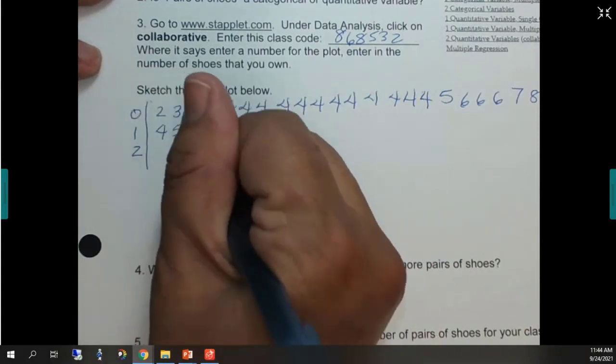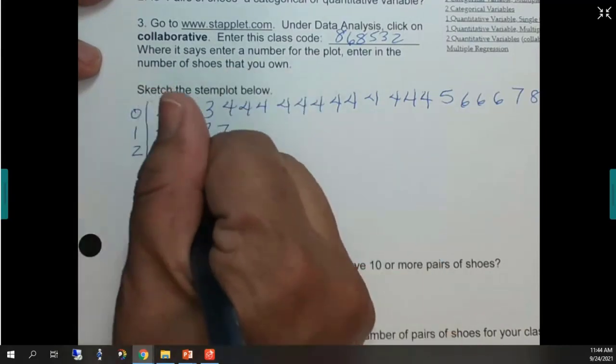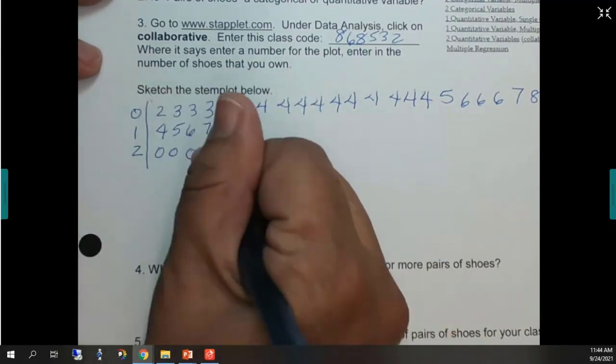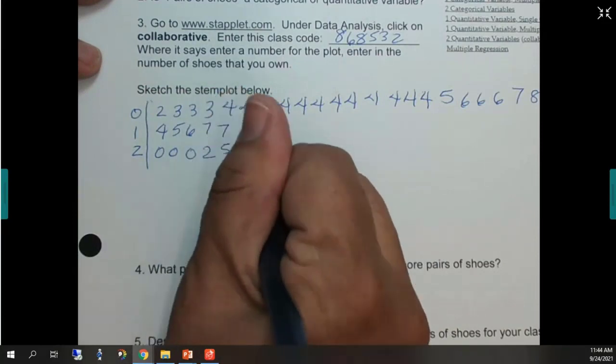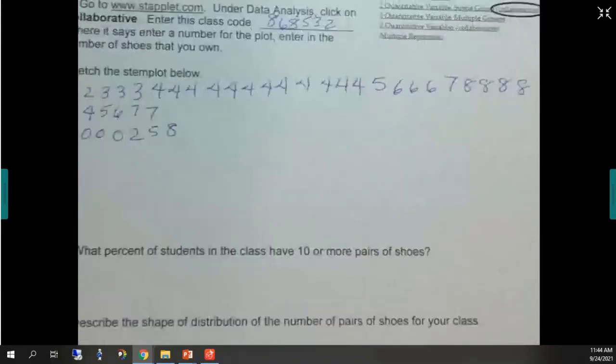It's pretty easy to have twenty-eight pairs of shoes, by the way, especially if they're cheap. I'm not saying their shoes are cheap. But you can get some cheap shoes, right? Yeah. All right. So that's the stem plot.